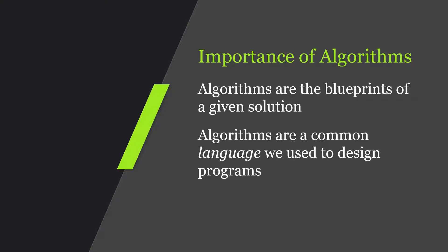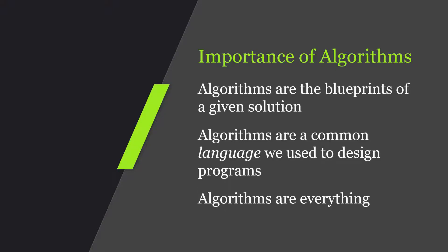Of course, there are some translation issues that will come up and things that we might have to go back to the drawing board on. Like there might be an English word that doesn't exist in French, so how do we translate that? We will have those issues and will talk about them down the road. But the main point here is algorithms are everything for a computer scientist. So I urge you to really pay attention to algorithms and always start with your algorithm before jumping into your C++ or Python code.